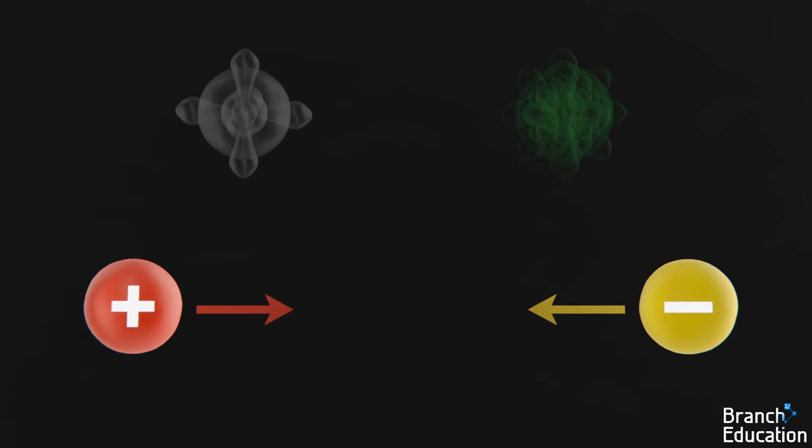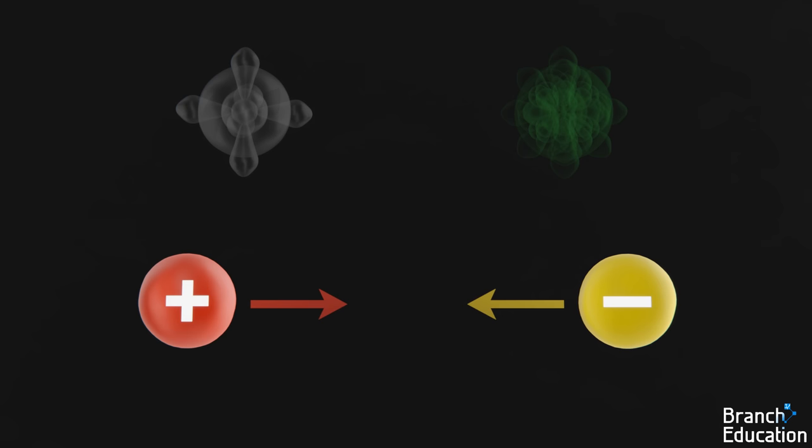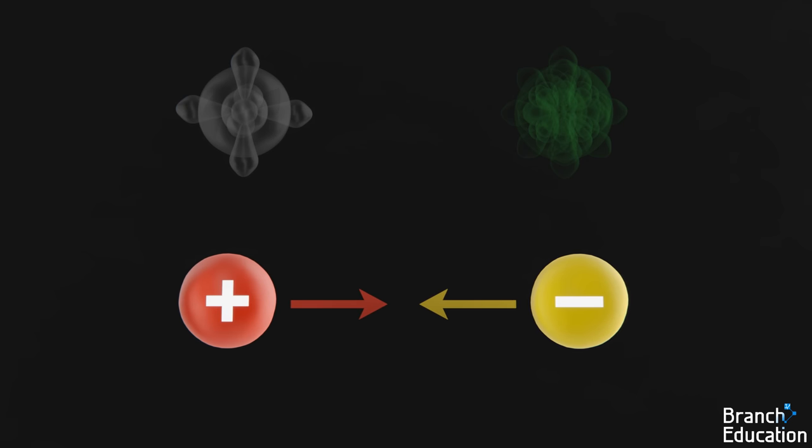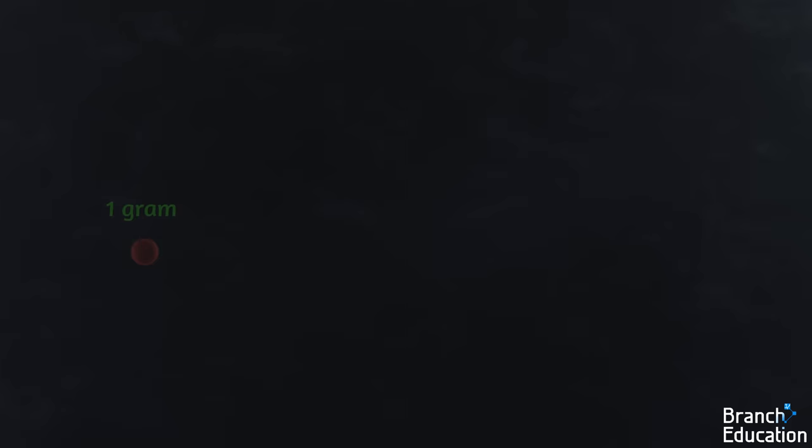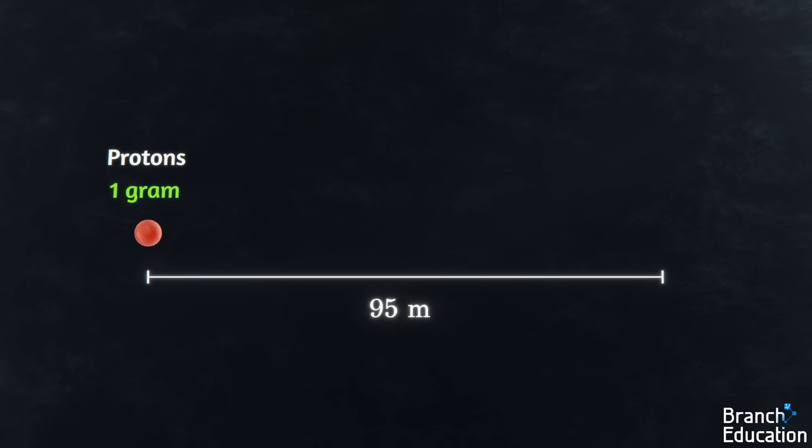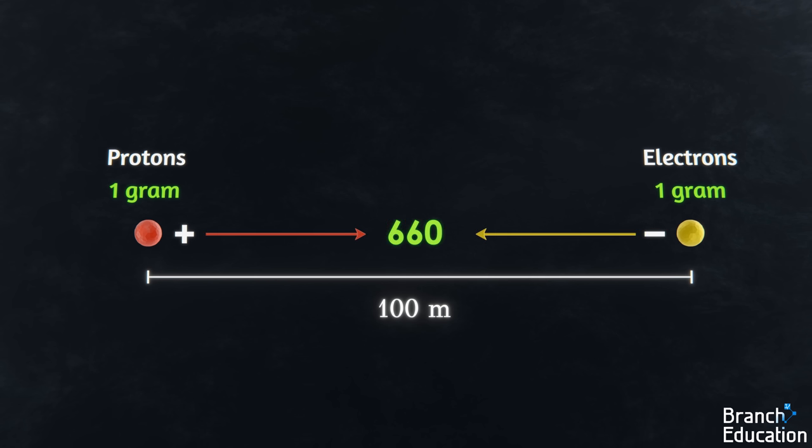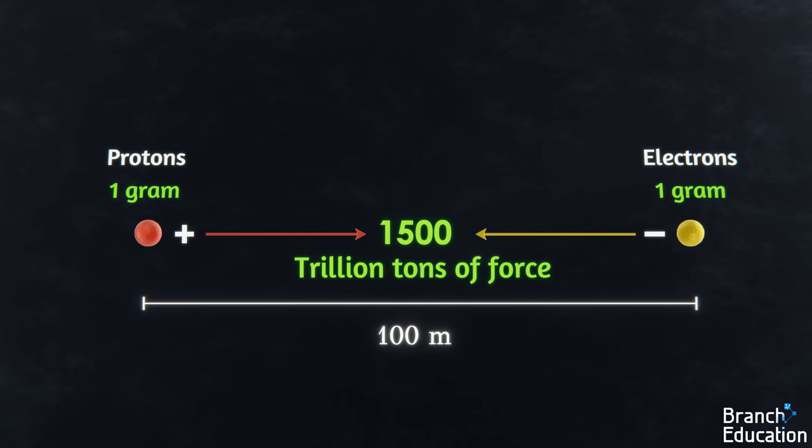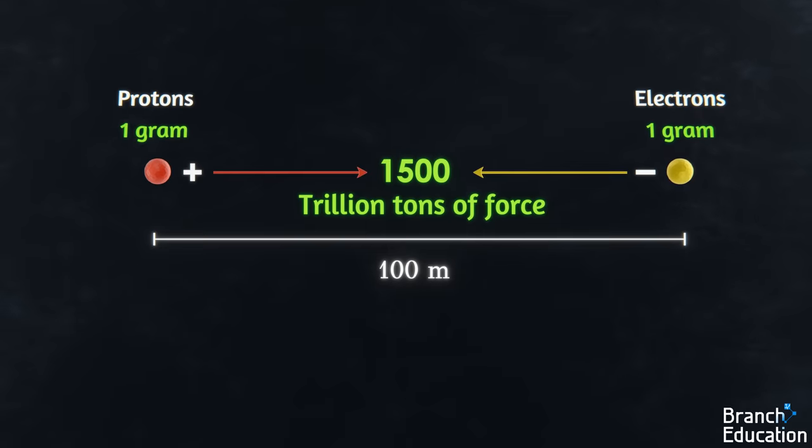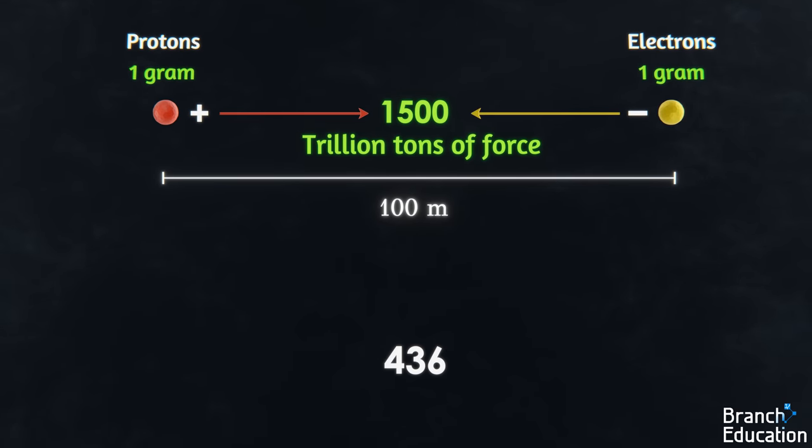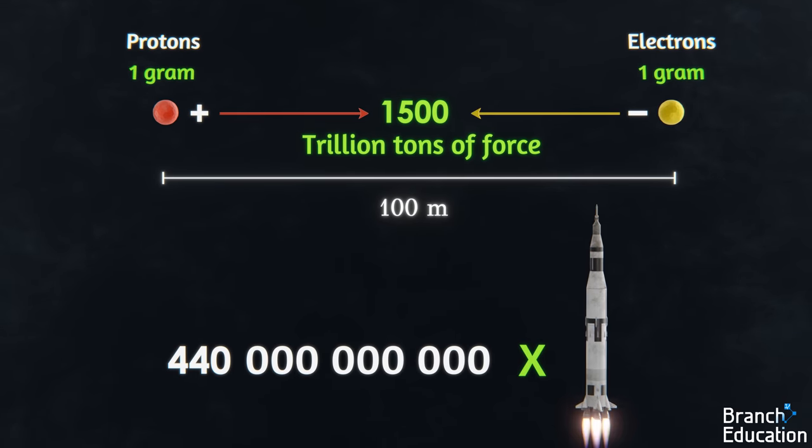Well, it has to do with the fact that positive charges and negative charges attract with a tremendous amount of force. For example, if one gram of pure protons were placed 100 meters away from one gram of pure electrons, the positive charges and negative charges would attract one another with 1500 trillion tons of force, which is equivalent to the force of 440 billion Saturn V rockets.